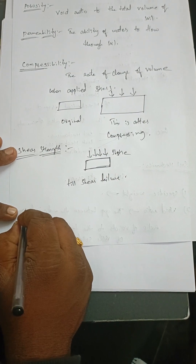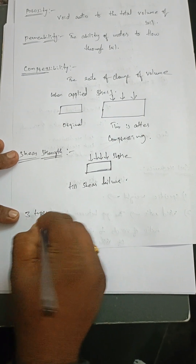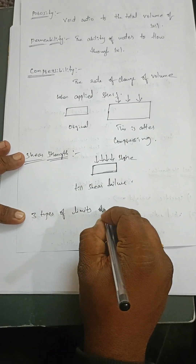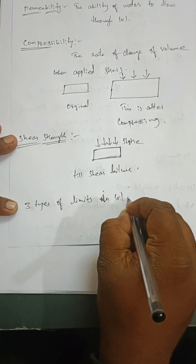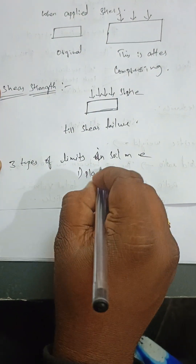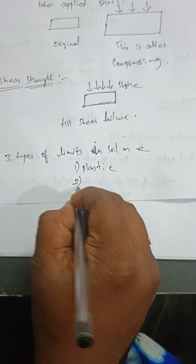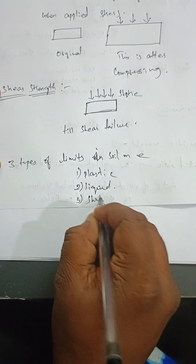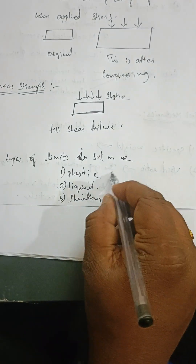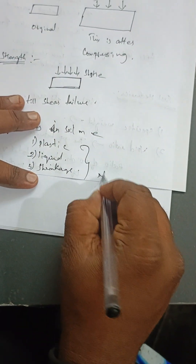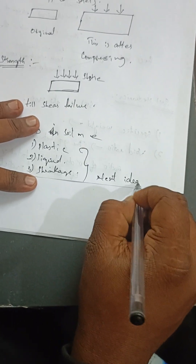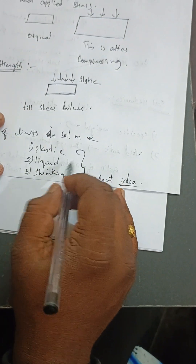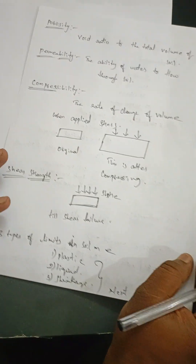The last but not least topic is that there are three types of limits in soil mechanics: plastic limit, liquid limit, and shrinkage limit. These topics are a little bigger, so I will continue them in the next video. This covers the basics of geotechnical engineering. The three limits and the other two branches will be completed in the next video. Thank you.